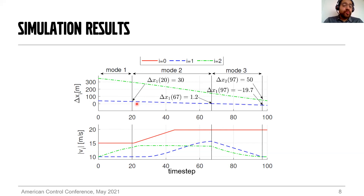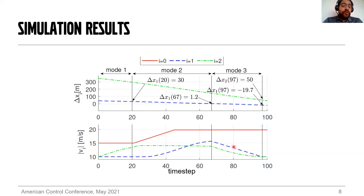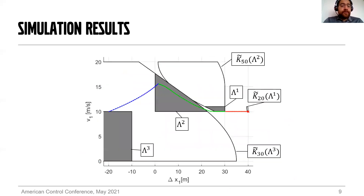We see that the gap deltex1 during mode two remains positive, meaning target one stays ahead of the VUT to block the overtake. Eventually, once the scenario reaches mode three, both test targets one and two decelerate to open a gap and allow the VUT to complete the overtake by cutting in front of target one. By the end of mode three, the gap is adequate enough for the VUT to cut in.